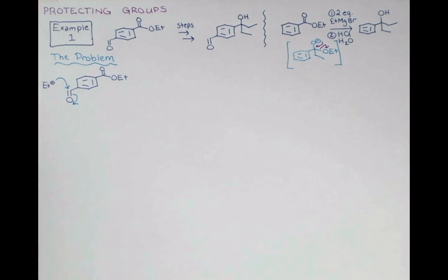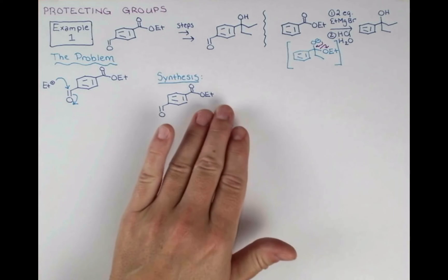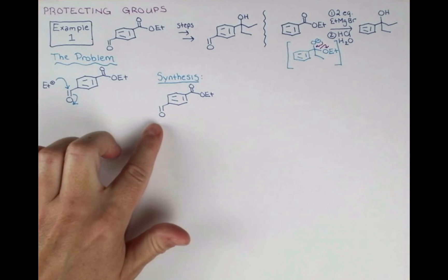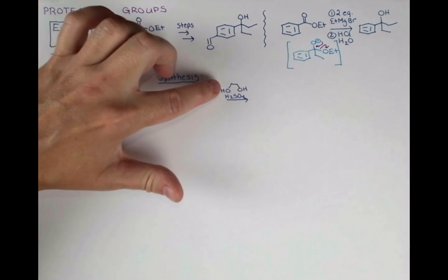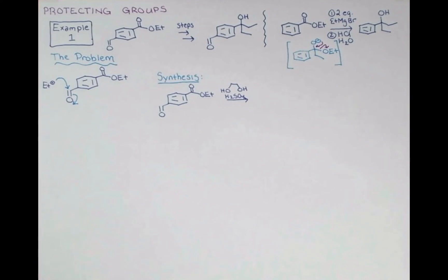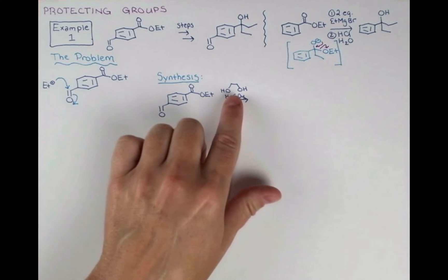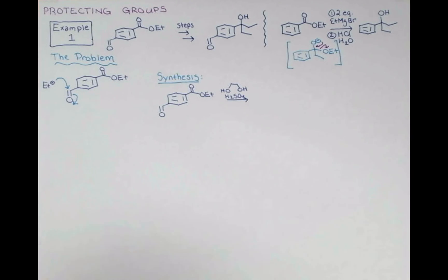For this problem, we can use an acetal protecting group. Let's check out our synthesis. Now the fact that the aldehyde is much more reactive than the ester doesn't doom our synthesis. It's actually an advantage for introducing the protecting group. If we treat this molecule with this diol ethylene glycol in the presence of acid, this group is more reactive, so it will react to form an acetal protecting group, and the ester will stay in this form.